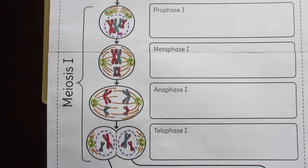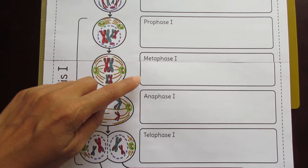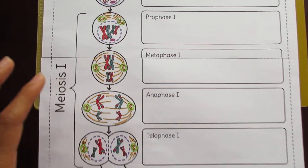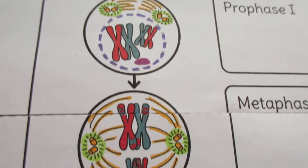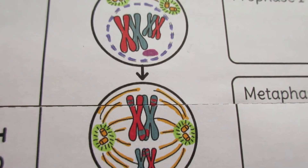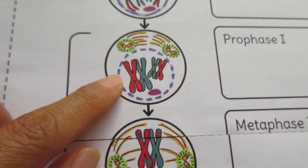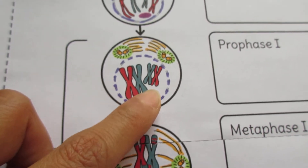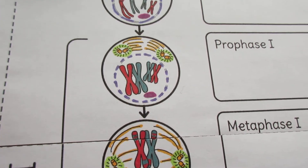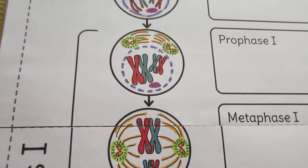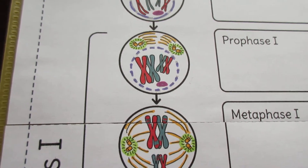For Meiosis I, you can see there's Prophase I, Metaphase I, Anaphase I, and Telophase I. Looking at the diagrams provided — here they're colored — for students who choose not to color them, for each homologous pair I've left one white, and the one colored in blue would appear in gray, so that students can distinguish the two members of each homologous pair from one another.